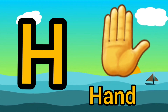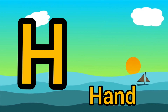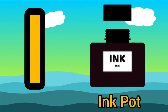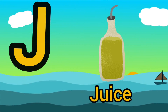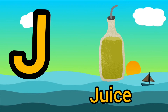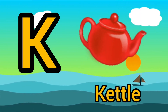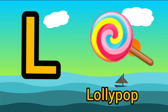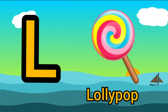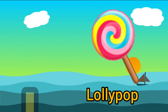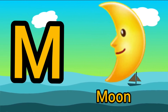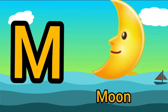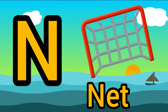H for Hand. I for Ink Pot. J for Juice. K for Kettle. L for Lollipop. M for Moon. N for Net.